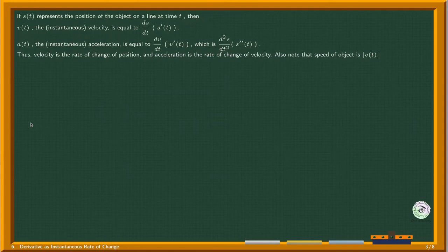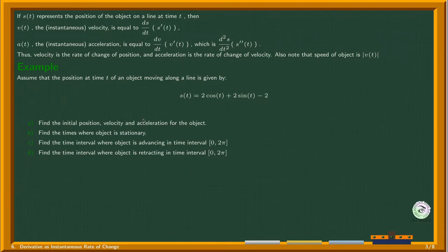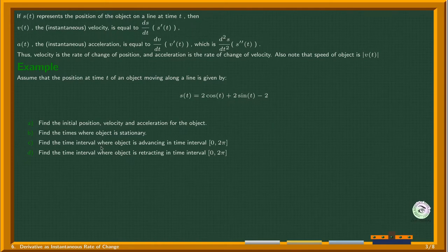Now let's look at an example. We have an object moving along a straight line, and its position with respect to origin O is given by a function — the position at time t. We are supposed to find the initial position, velocity, and acceleration for the object; the times where the object is stationary; and the intervals where the object is advancing (moving away from the origin) or retracting (coming towards the origin).